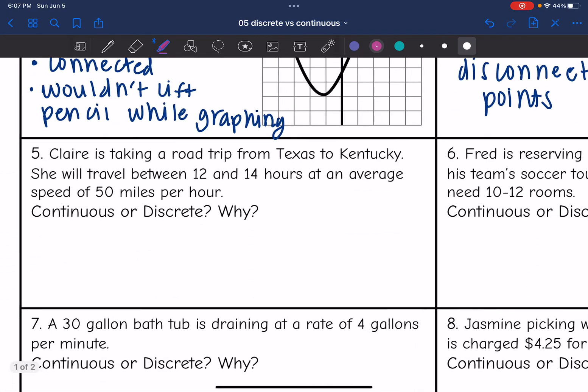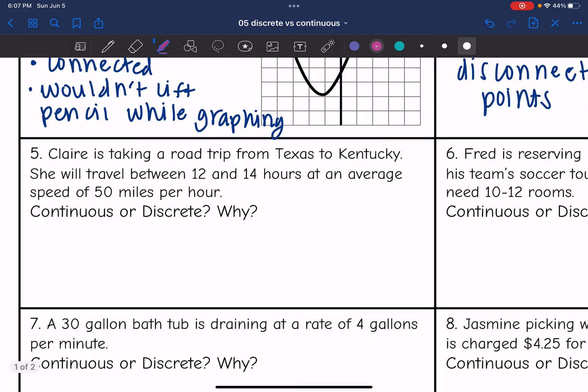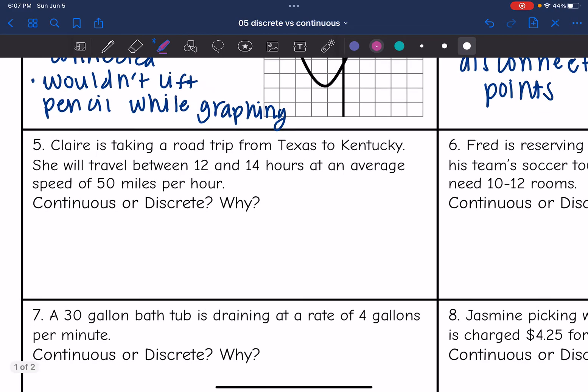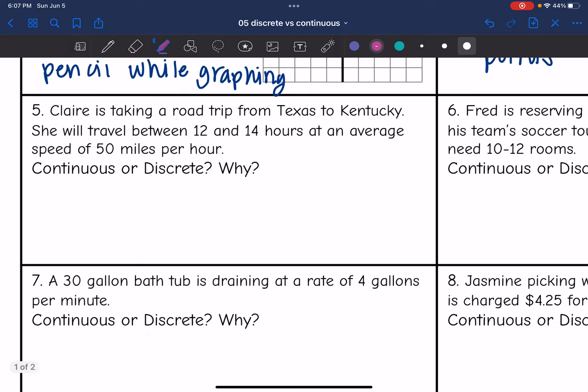Okay, now we're going to get into some word problems. So we have to think about what the graphs would look like and if this situation would have partials or not. So it says Claire is taking a road trip from Texas to Kentucky. She will travel between 12 and 14 hours at an average speed of 50 miles per hour. Is this continuous or discrete and why?